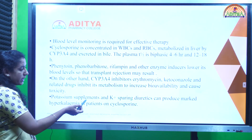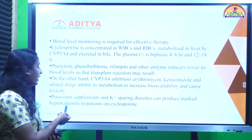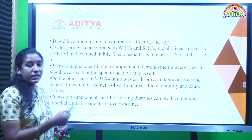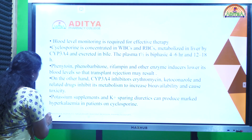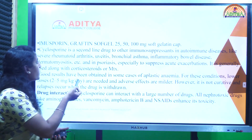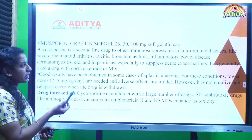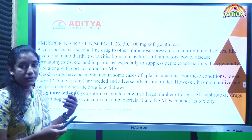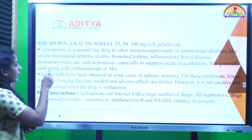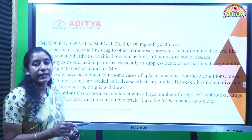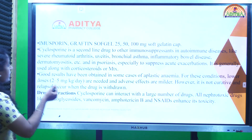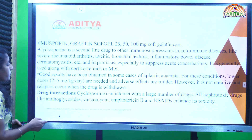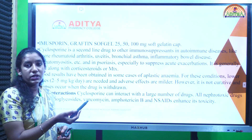Cyclosporine is sold under the name Imusporin/Graftine in soft gelatin capsules of 25 mg, 50 mg, and 100 mg. It is the second-line drug for other immunosuppressant diseases beyond transplantations, including autoimmune disorders like uveitis, asthma, rheumatoid arthritis, inflammatory bowel disease, dermatomyositis, psoriasis, and aplastic anemia.